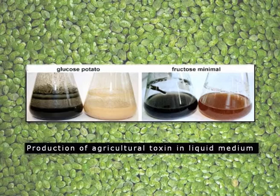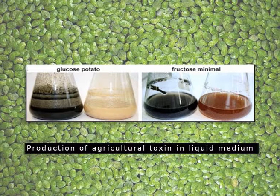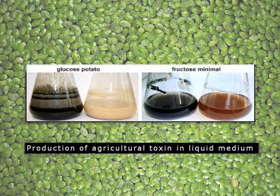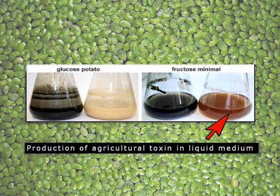Commonly the fungi is inoculated in a liquid medium, which can be glucose minimal media, glucose with potato extract, fructose minimal media, or any type of liquid media containing a nitrogen source like asparagine. Normally this type of mycelia will grow in the liquid media and will produce the toxin in the substrate or in the liquid. Whenever that liquid is applied to any plant seed, the effect of toxicity will be observed.